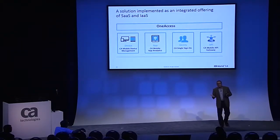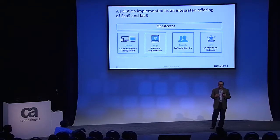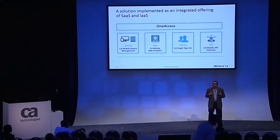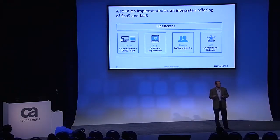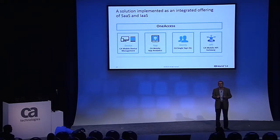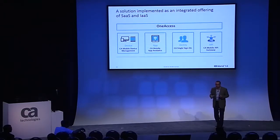Besides the One Access native app itself, there are four CA technologies that enable this solution. The two on the left — mobile device management and CA mobile application analytics — we consume off our SaaS infrastructure as a customer, in exactly the same way you would. The stuff on the right — CA single sign-on (the artist formerly known as SiteMinder) and the mobile API gateway — are on-premise applications, though we run those on Amazon's virtual private cloud. So we don't have one spec of infrastructure in one of my IT data centers; it all runs on a combination of SaaS and IaaS.